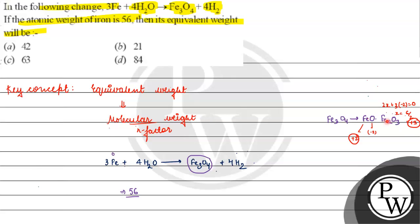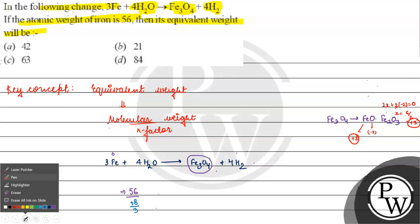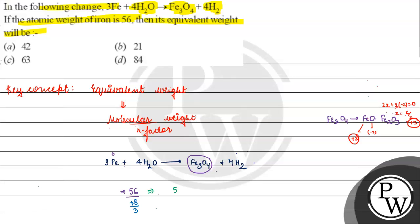So in Fe₃O₄, we have 3 iron atoms total. The combined oxidation contribution is: one Fe at +2 and two Fe at +3, giving +2 + +6 = +8. So the average oxidation state is +8/3 per iron atom. The n-factor is 8/3, since iron goes from 0 to +8/3. Equivalent weight = 56 × 3 / 8 = 21. So the equivalent weight is option B: 21. I hope you understood it well — thank you, all the best!